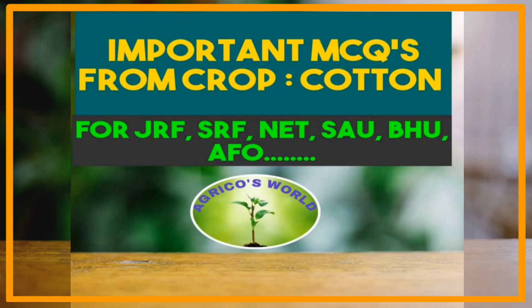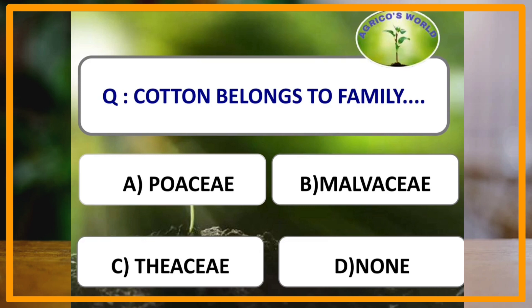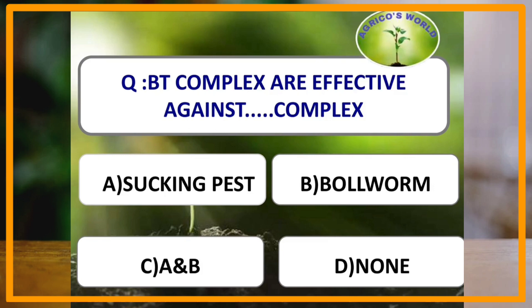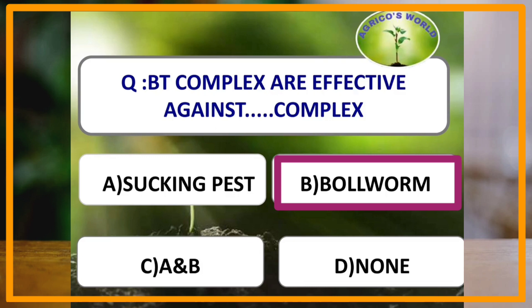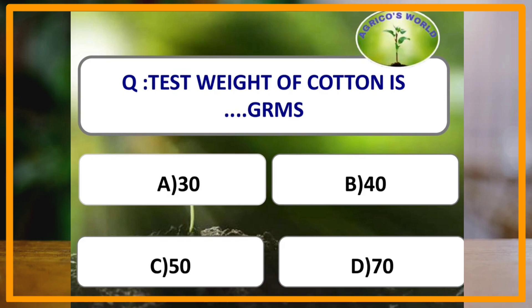Our first question: cotton belongs to which of the following families? Cotton crop belongs to the family Malvaceae. Our next question: BT complex is effective against which of the following pests? BT complex is effective against bollworm complex, and it is not effective against sucking pests.